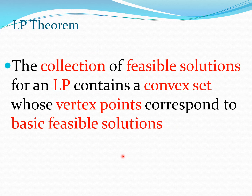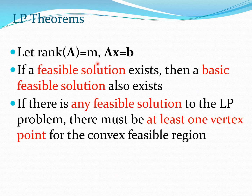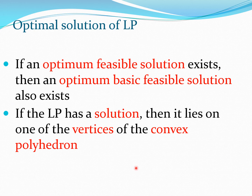Stating these results as theorems: the collection of feasible solutions for an LP forms a convex set whose vertex points correspond to basic feasible solutions. If rank A equals M and the system AX equals B has a feasible solution, then a basic feasible solution also exists. Furthermore, if an LP feasible solution exists, then an optimal basic feasible solution also exists, lying on one of the vertices of the convex polyhedron.